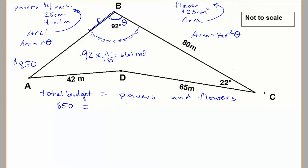So let's think about what the cost of my pavers are going to be. There's 4 of them in a meter, and I need $4 each, and I can figure out how many I need by using my arc length. So that's going to be my arc length times $4 per paver times 4 per meter, plus my area of my sector is going to be 1/2 r² theta times $25.